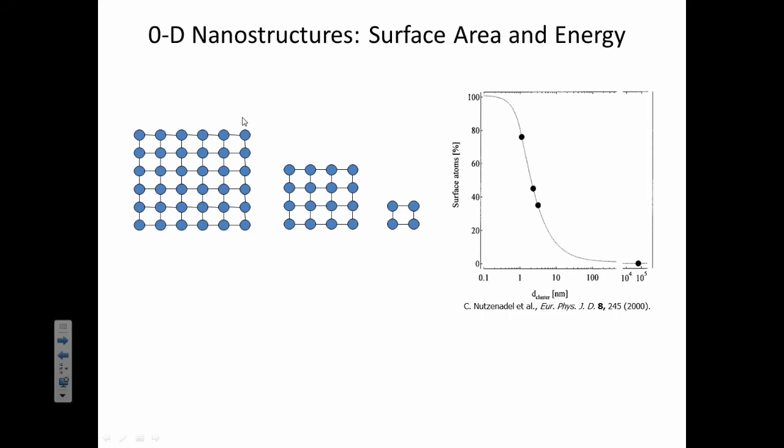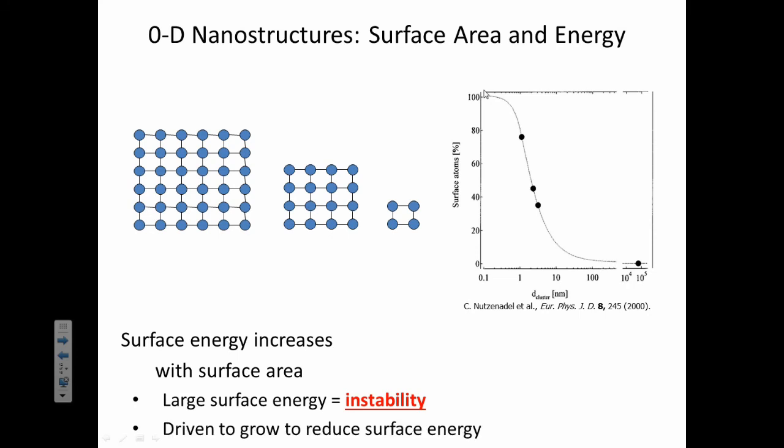Here's another description of how the percentage of surface atoms increases as things get smaller. So here, as the diameter gets smaller, the percentage of surface atoms reaches 100%. Okay, so again, just to repeat, things with a large surface area are unstable. So they're driven to grow.